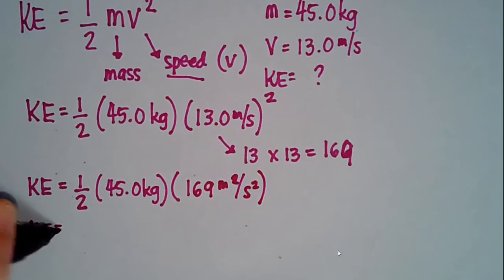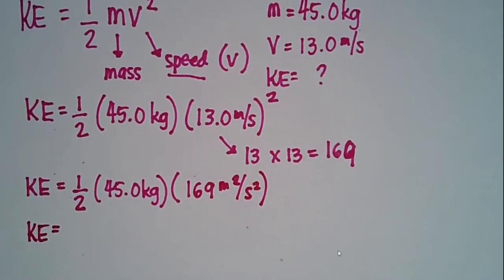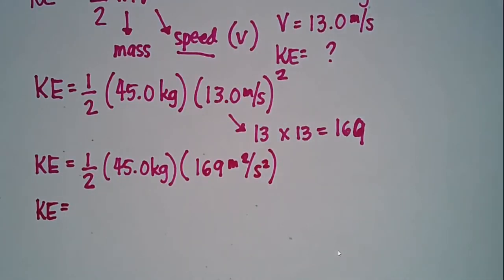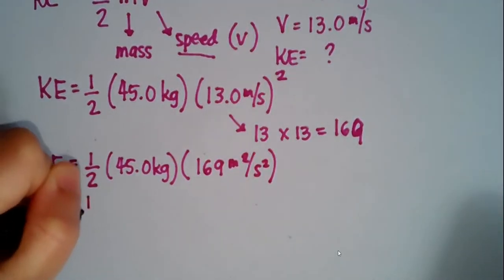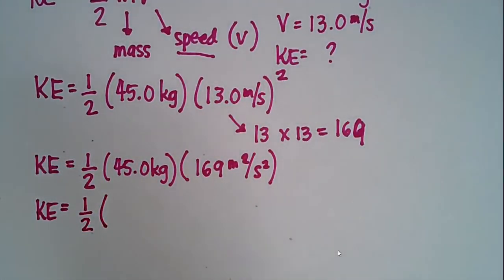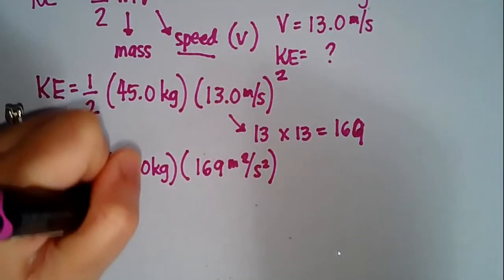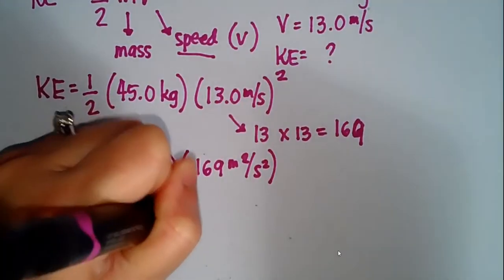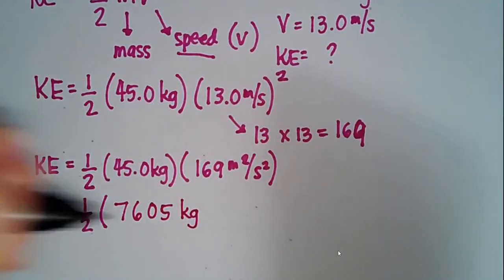So moving on, if you have your calculators you can go ahead and do this. You can pause this video and verify the answer. So I will keep the 1/2 right here, and if I multiply 45 times 169 using a calculator, that will give you 7,605. I will copy down the units: kilogram meter squared over second squared.